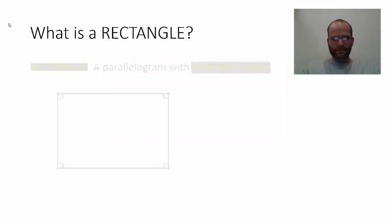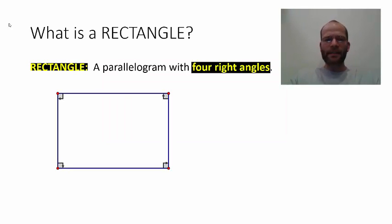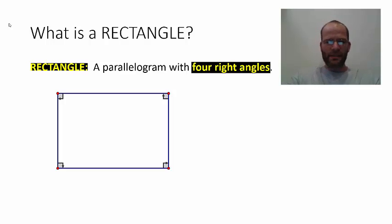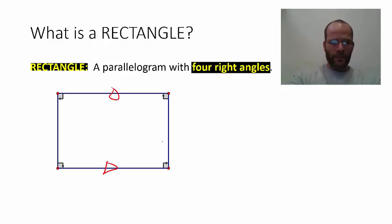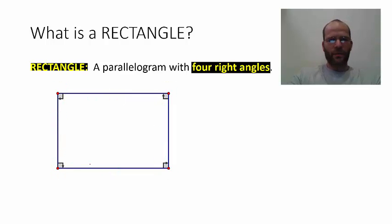What is a rectangle? A rectangle is a parallelogram with four right angles. If I'm trying to figure out if I'm looking at a rectangle, I need to ask: first, is it a parallelogram — are these sides parallel? And secondly, does it have four right angles? So it's really the angles that are driving the bus.